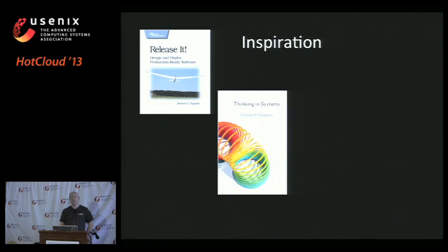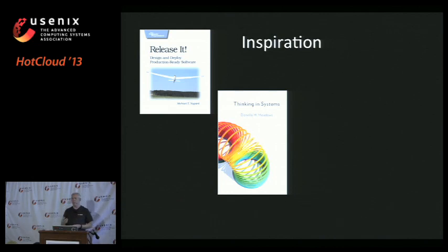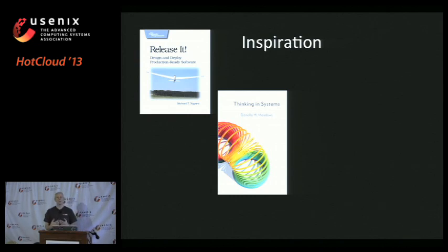'Thinking in Systems' isn't really about computing — it's mostly about economics — but it's about how if you set up the right systemic behaviors, you get the right emergent behavior. You don't have to control something; you have to set up the initial conditions correctly, the feedback loops, measurements, and incentives. If you do that right, the system automatically produces a workable environment. This is very applicable to large-scale computer systems, which are complex adaptive systems with emergent behavior.